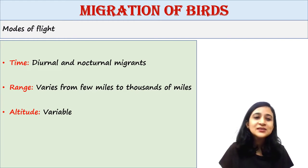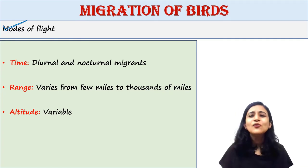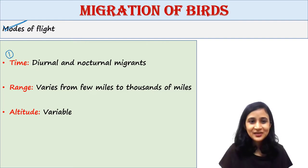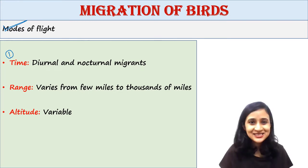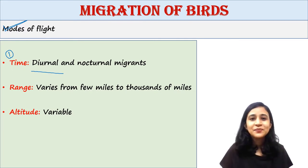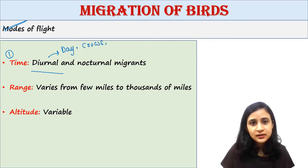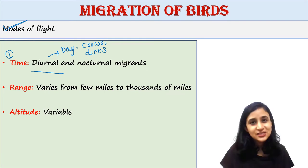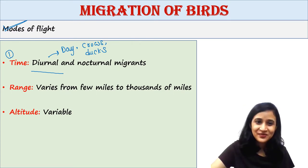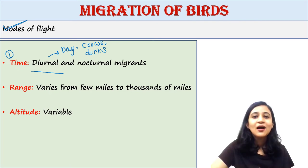Next are the modes of flight in migration. Birds follow different modes of flight. First is timing — most migratory birds fly either during daytime or nighttime. Diurnal birds fly mainly by day; examples include crows and ducks. They may stop to get their food in suitable places and then fly again. These are called diurnal migrants.